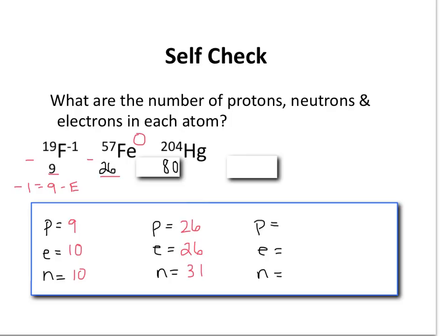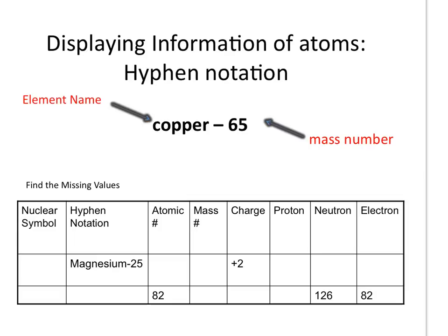Lastly, mercury has an atomic number of 80, so that's 80 protons. Once again, there is no charge, which means we have 80 electrons. And 204 minus 80 is 124 neutrons.